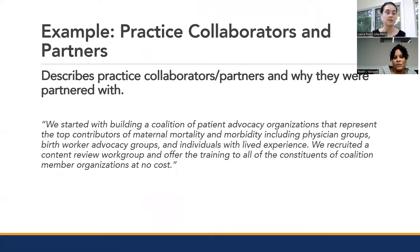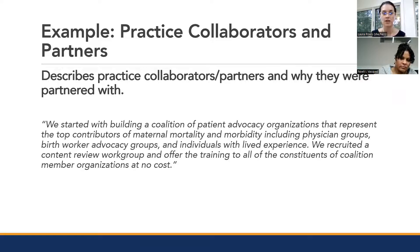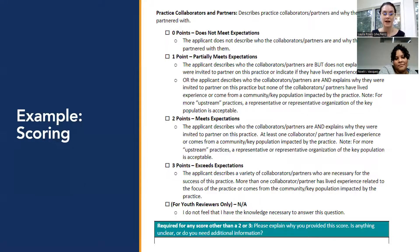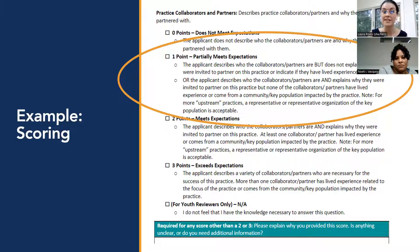Looking at a second example: 'We started with building a coalition of patient advocacy organizations that represent the top contributors of maternal mortality and morbidity, including physician groups, birth worker advocacy groups, and individuals with lived experience. We recruited a content review work group and offered the training to all constituents of the coalition member organizations at no cost.' I would score this as a one because the practice did describe who the collaborators and partners were, but did not explain why they were invited to partner or indicate their lived experience.